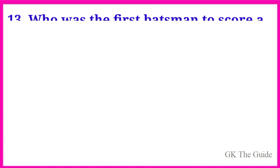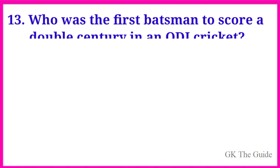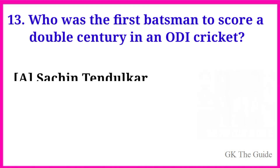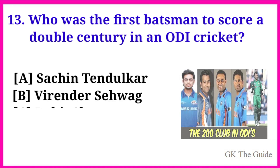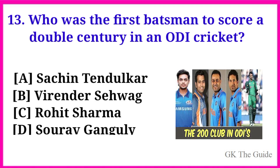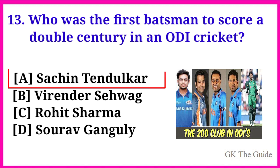Question 13: Who was the first batsman to score a double century in an ODI cricket? Option A. Sachin Tendulkar is the correct answer.